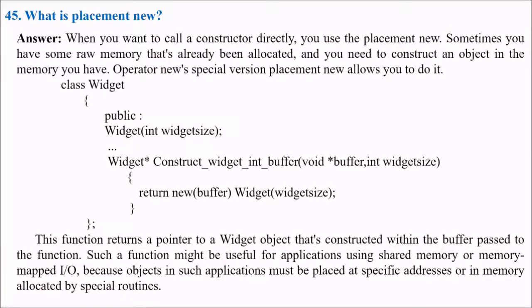What is a placement new? When you want to call a constructor directly, you can use the placement new. Sometimes you have some raw memory that's already been allocated, and you need to construct an object in the memory you have. Operator new's special version placement new allows you to do it.